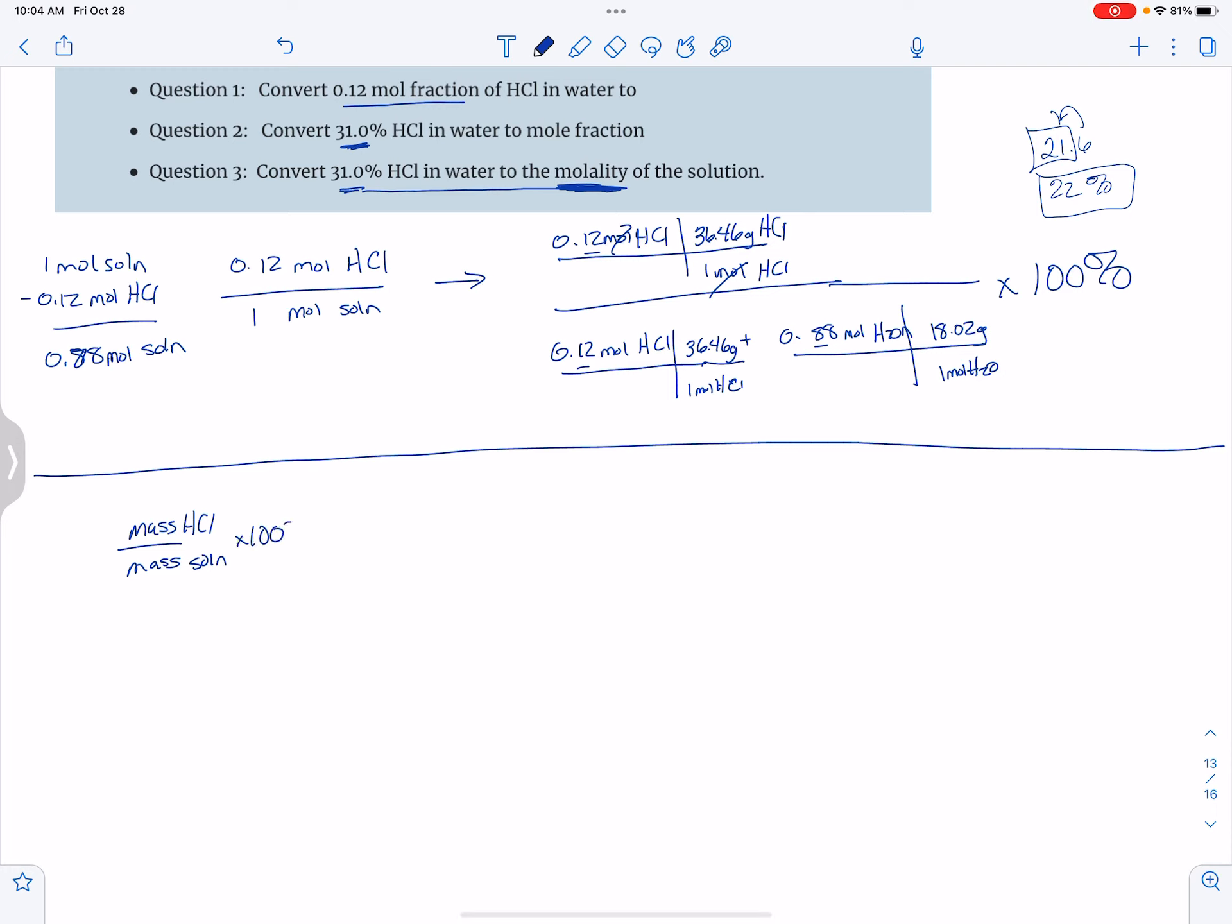times 100% equals 31.0%. So I'm going to divide both sides by 100, which tells me that I have 0.31 grams of HCl for every one gram of solution.